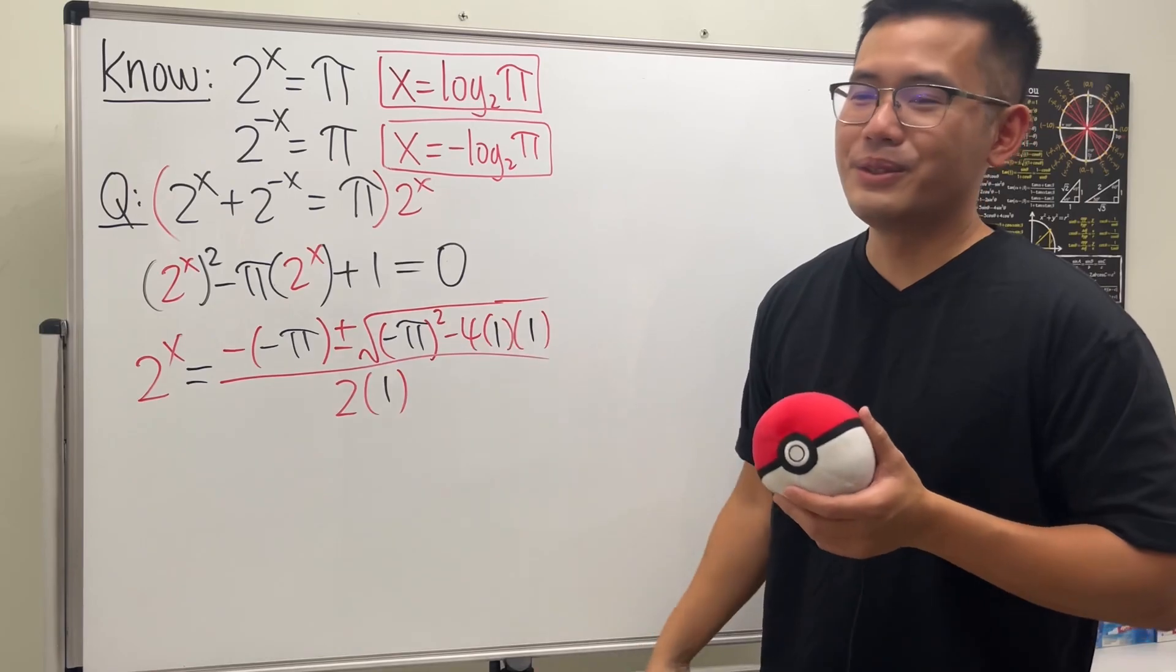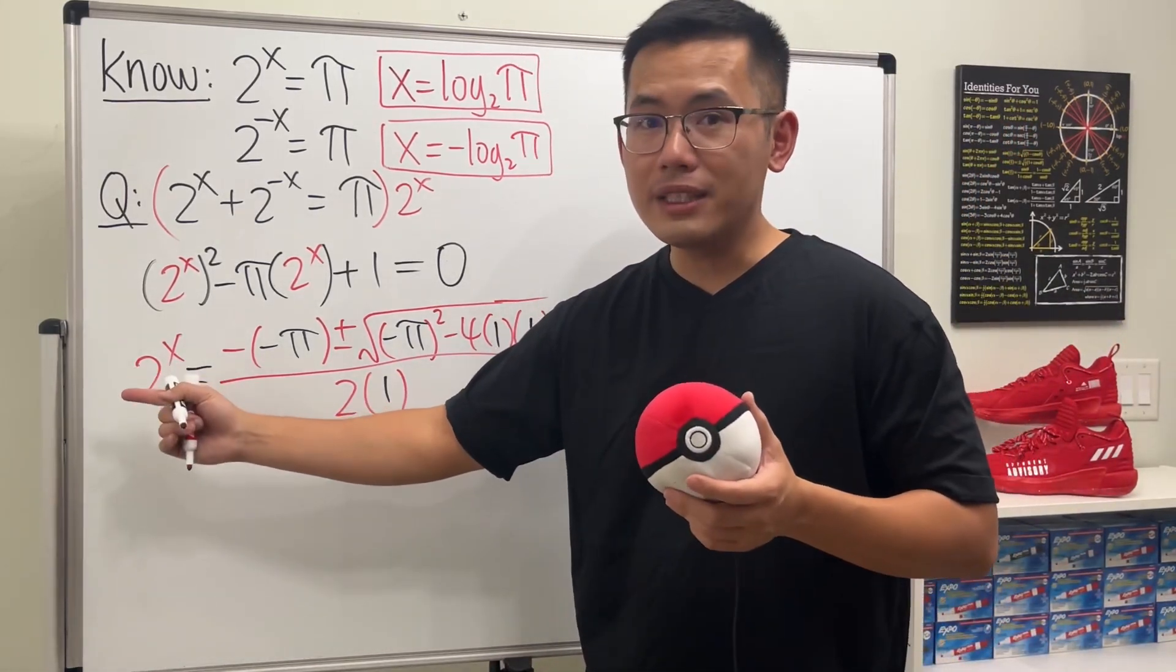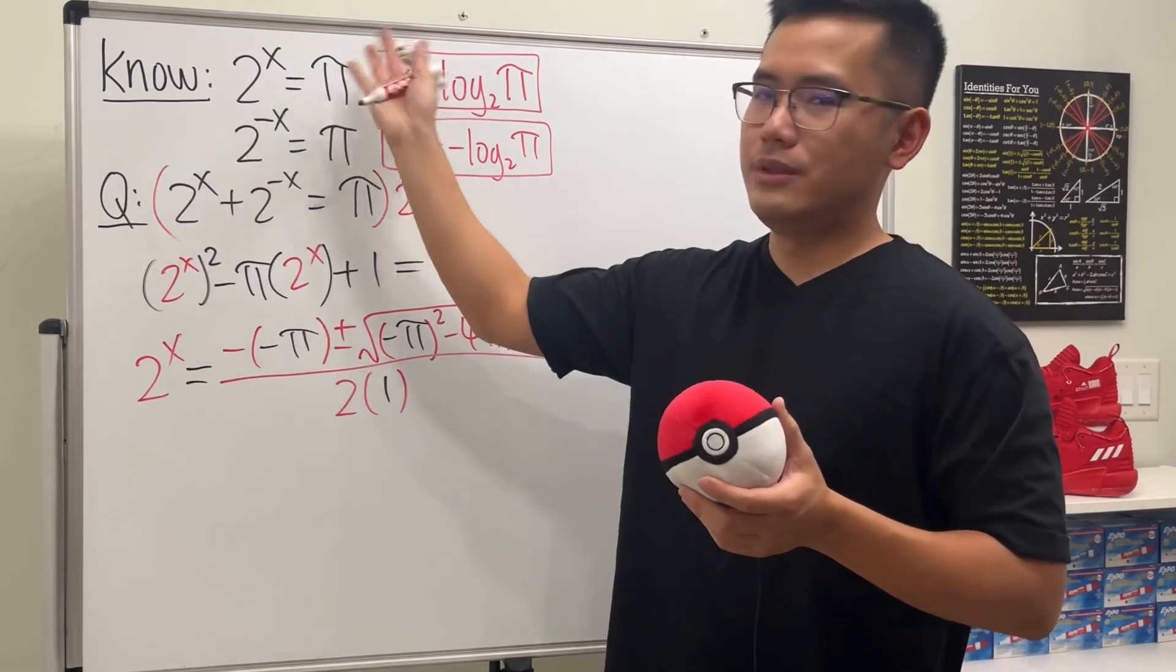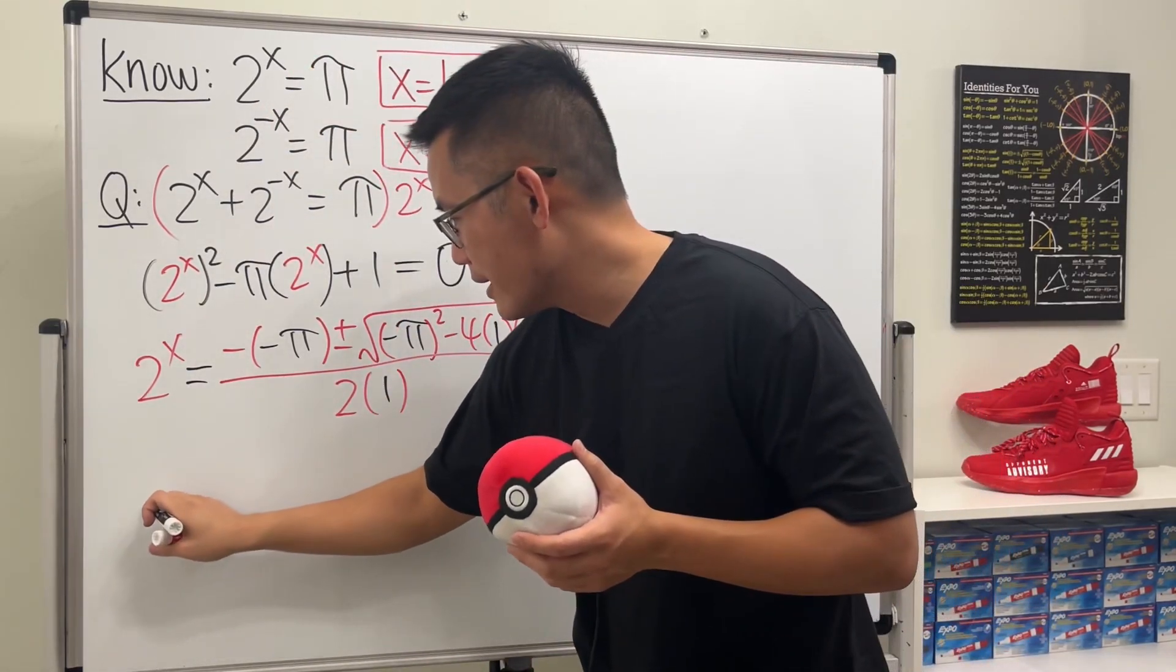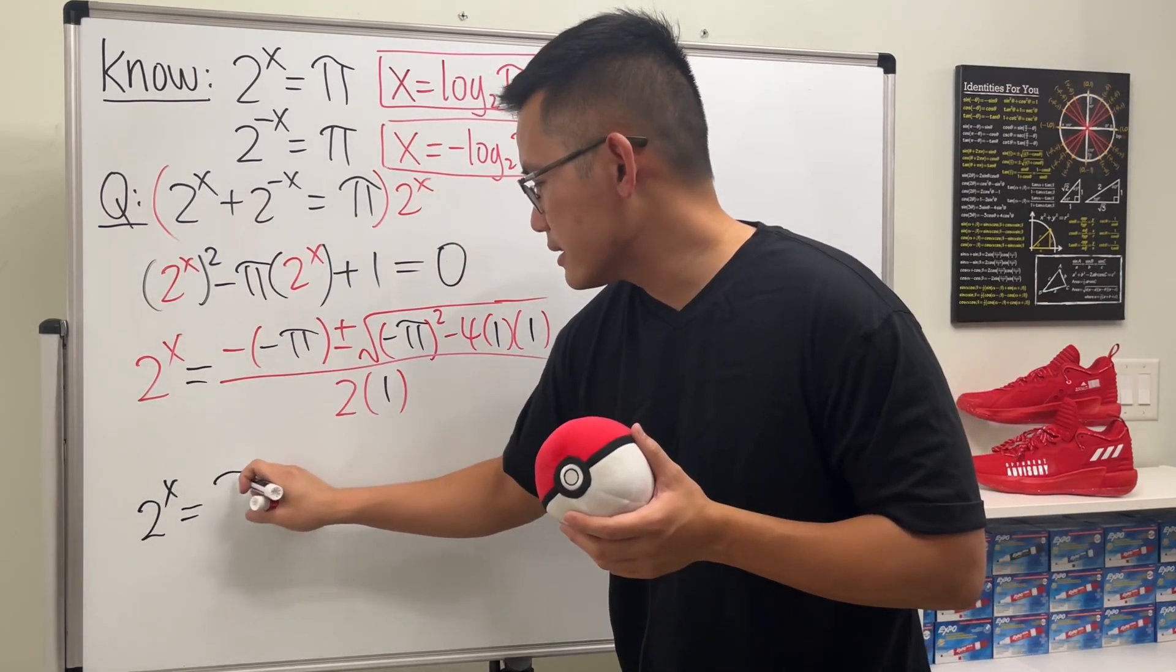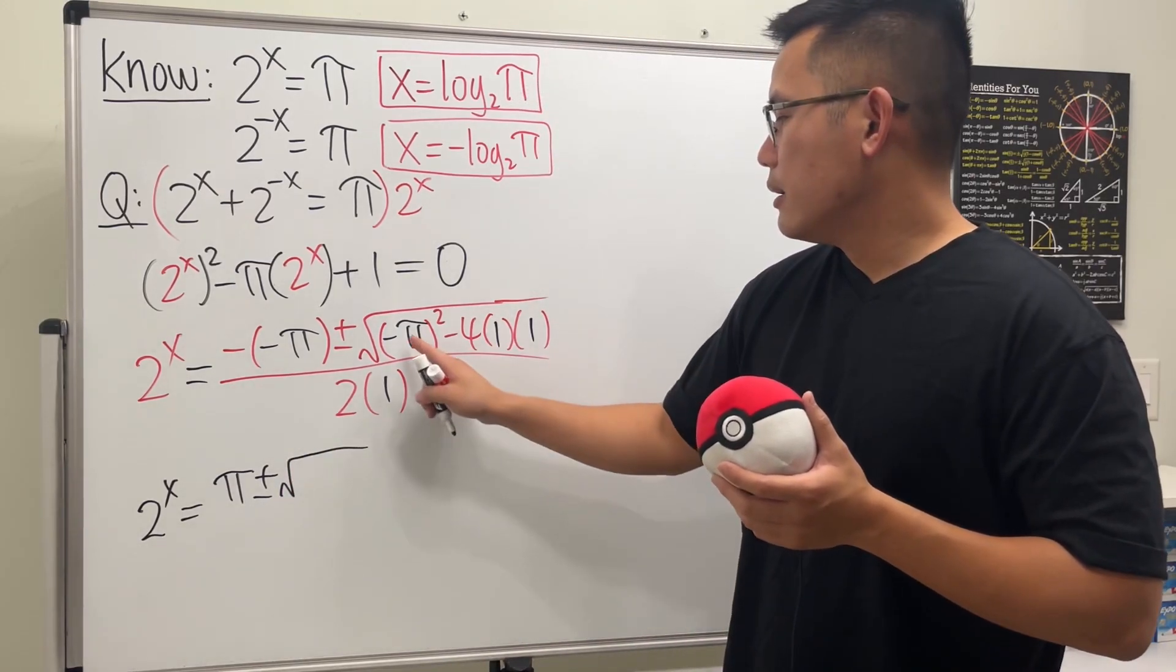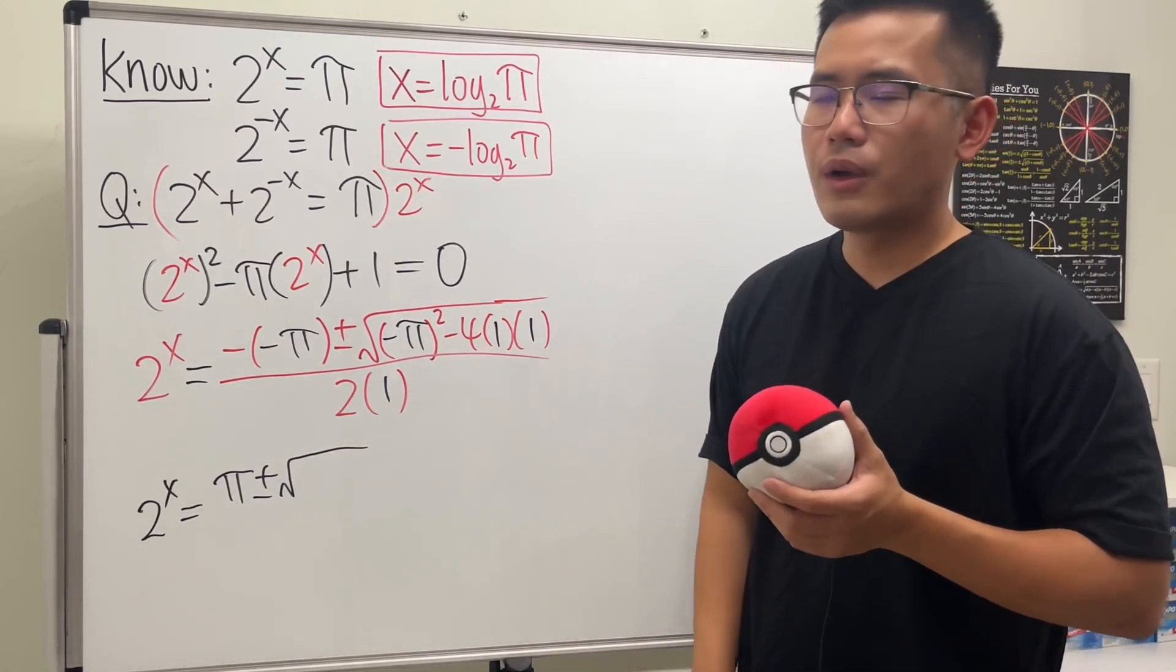Almost, almost, not yet. But you see, now we have 2 to the x. It will be similar to the first equation. But anyway, let's see. We have 2 to the x, and that's equal to positive pi, and then plus or minus, square root, pi squared, minus 4.